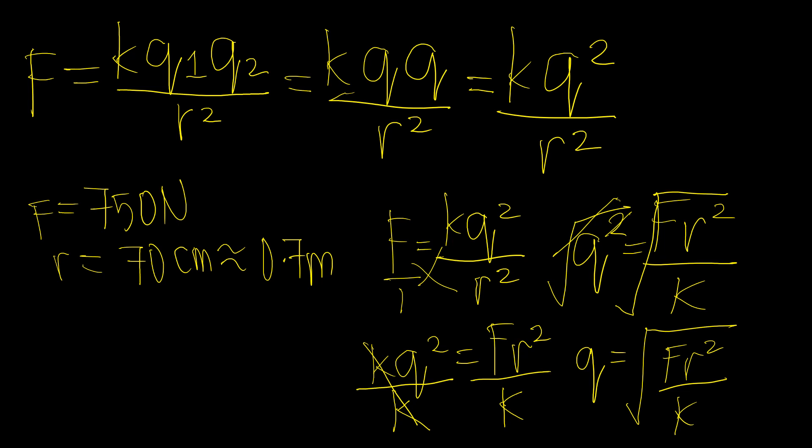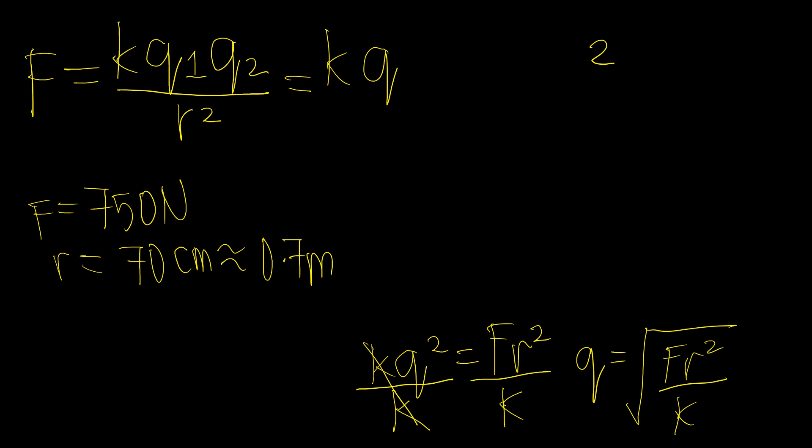So let's erase this first. Okay, so we have the formula: Q is equal to the square root of F R squared over K.